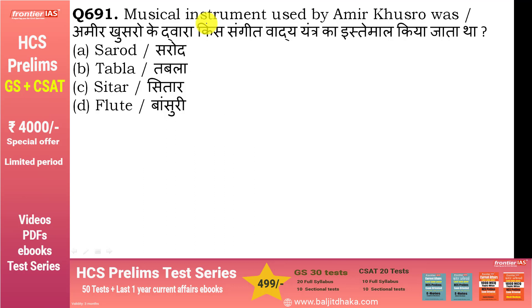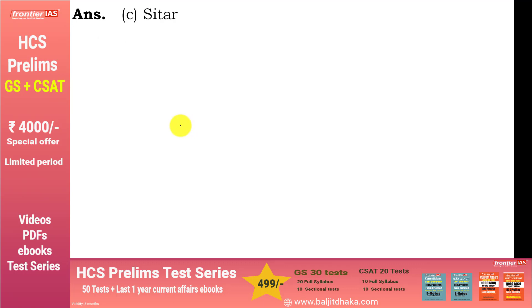Musical instrument used by Amir Khusro was — सितार.